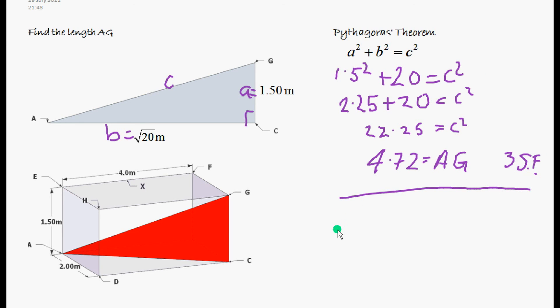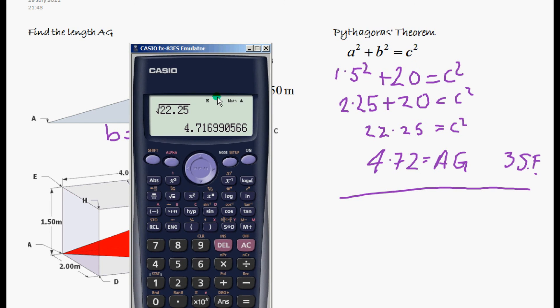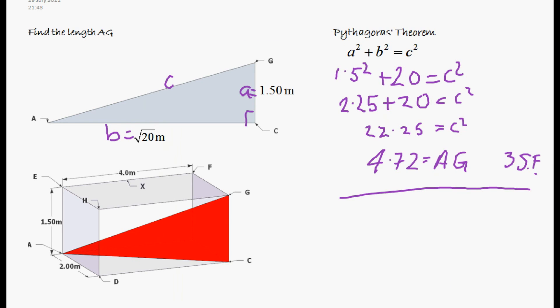In GCSE, there is no need to round this. We could quite happily keep all the figures in our calculator and write them down and get four marks. So if you're not very good at rounding, I suggest you do that.